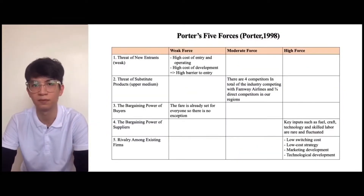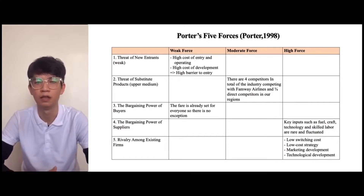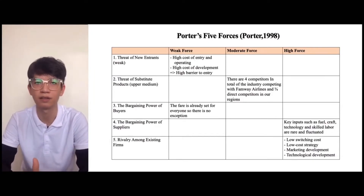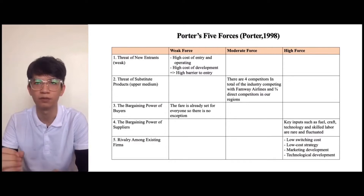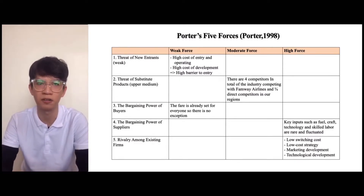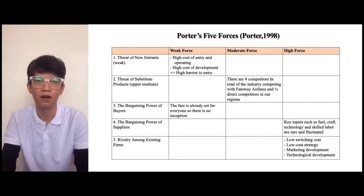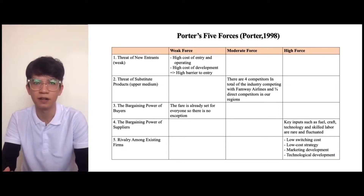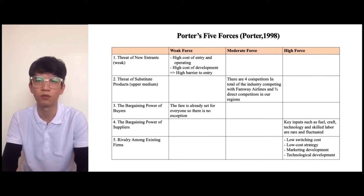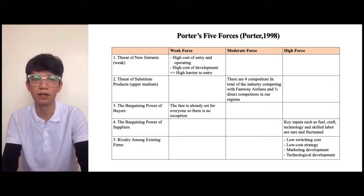Next is about Porter's Five Forces. The first threat is new entrants, which we consider a weak force because they need high cost of entry, operating, and development, leading to high barriers to entry. The second is the threat of substitute products — there are 4 competitors in the industry and 3 to 4 direct competitors in our region. The third is the bargaining power of buyers — fares are already set for everyone with no exception. The fourth is the bargaining power of suppliers — fuel, aircraft, technology, and skill levels are raised and fluctuated. Finally, rivalry among existing firms is considered a high force due to low switching costs, low-cost strategies, and marketing and technological development.